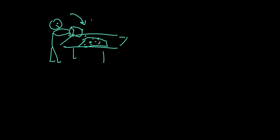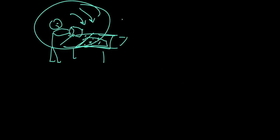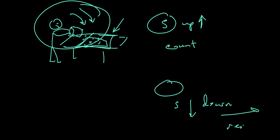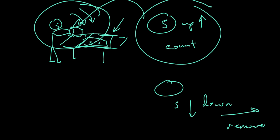Count the S up Skittles and return them to the Dixie cup. Dump the cup out again onto the paper towels. Once again, count all that landed S up and return them to the cup; remove all that landed S down and set them aside. Repeat this process again and again, each time counting the S up Skittles before returning them, until the number of S up Skittles reaches zero.